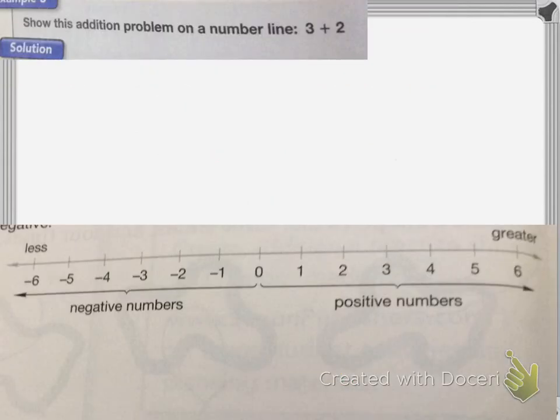Okay, so with the number line, we can also show addition and subtraction problems. So here, I have 3 + 2. To show it on a number line, I'm going to start at 0, because that's where you always start. And I'm going to go positive 3, plus 3. So I'm going to go up 3: 1, 2, 3.